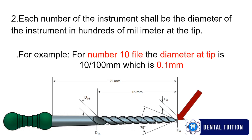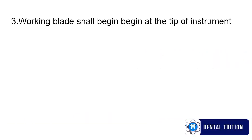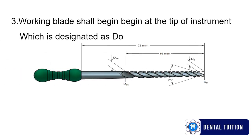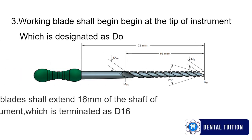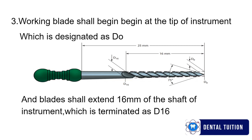Now next recommendation we are going to discuss is that the working blade shall begin at the tip of the instrument, which is designated as D0, and the blades shall extend 16 millimeters from the tip of the instrument, which is terminated as D16.